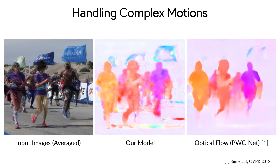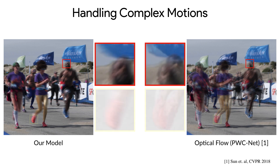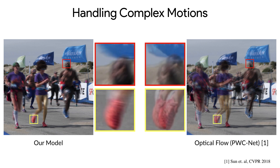If we take a look at the lines our model is producing, we gain some insight as to why the results are looking better. In addition to being able to handle occlusions, as we saw earlier in the toy example, our model can represent complex motions, such as the non-rigid waving flag or shadows moving along the ground in this example. We see that our model produces more accurate motion blurs, whereas the optical flow approach often suffers from ghosting or duplicated objects.